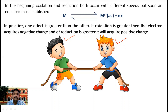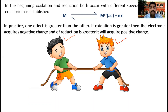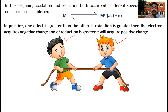The magnitude of electrode potential depends on three factors: the nature of the electrode, the concentration of the electrolytic solution, and the temperature.